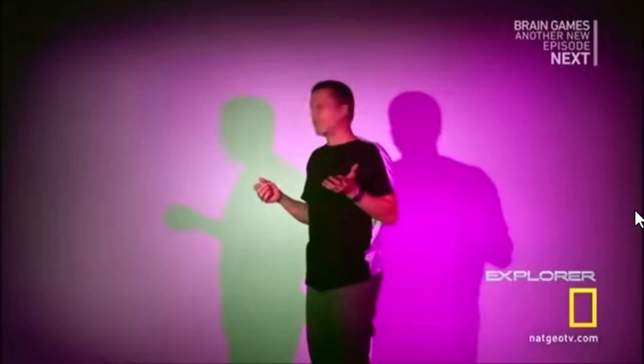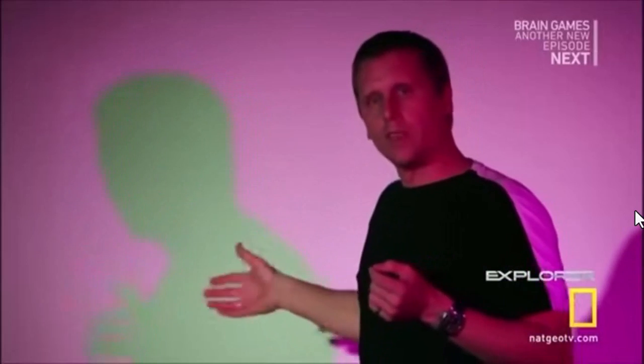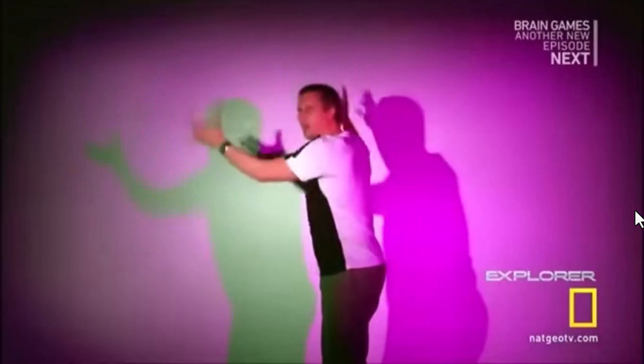So the question is, where is that green light coming from? Well, there is no green light. The shadow's gray, but it looks green. Why? Because of the color that's surrounding it. Context is everything.